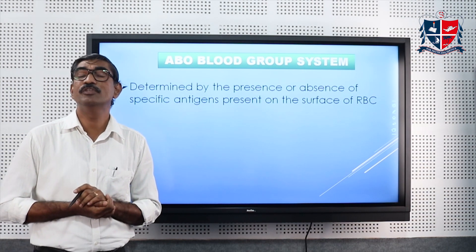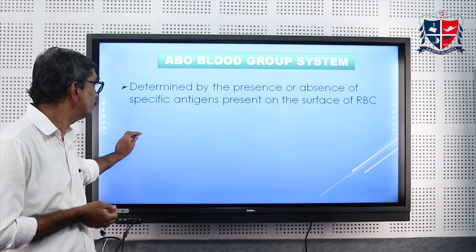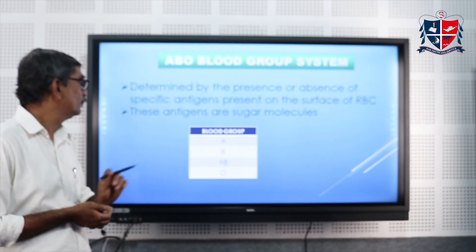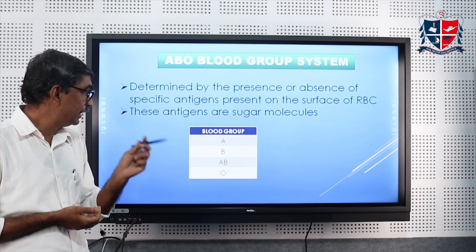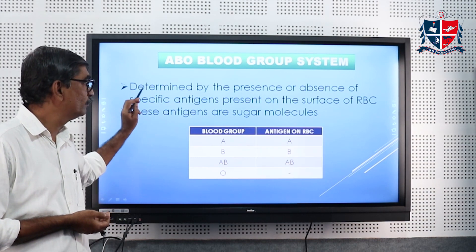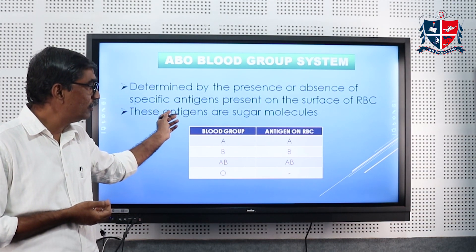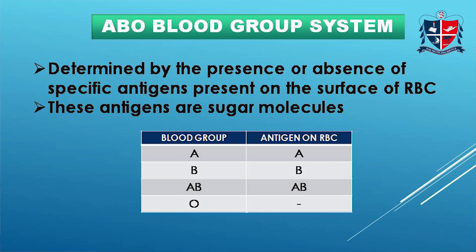The ABO blood group system is determined by the presence or absence of antigens on the surface of RBCs, and these antigens are nothing but sugar molecules. The various blood groups of the ABO system are A, B, AB, and O. The corresponding antigens are: A antigen for blood group A, B antigen for blood group B, AB antigen for blood group AB, and no antigen at all for blood group O.